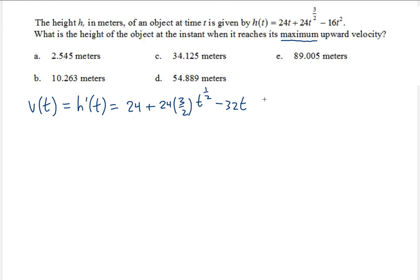Simplifying, the velocity function is v(t) = 24 plus — now 24 over 2 is 12, and 12 times 3 is 36 — so 36 times t to the 1/2, minus 32t. This is the velocity function.